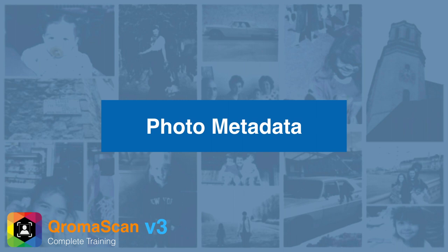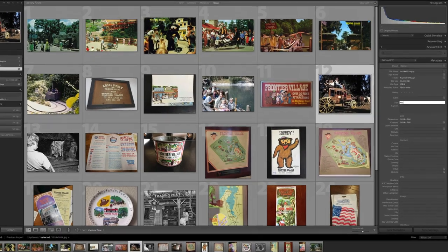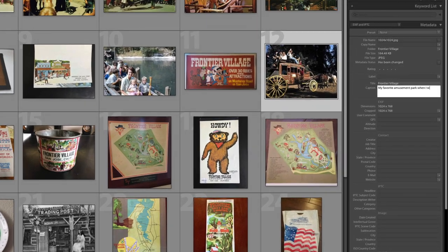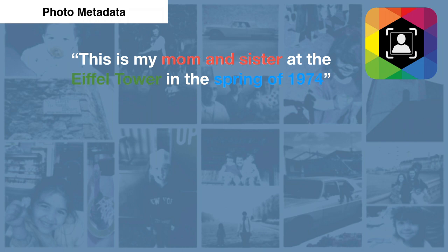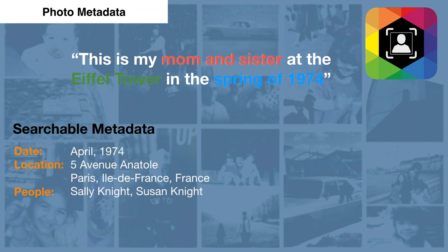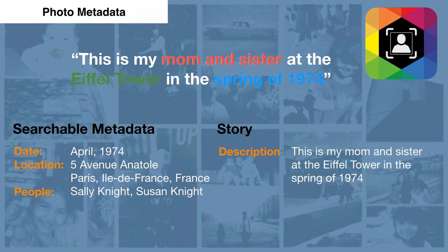Before we get started with ChromaScan, I want to talk a little bit about photo metadata and what it can do for you, and why it's such an important part of the ChromaScan experience. Historically, adding metadata has been like filling out a spreadsheet, where you type information in field after field. ChromaScan uses a new technique called natural language tagging, where you describe your photos normally and our software detects important things like the people, places, and dates. We resolve this information and place the tags in the correct places, so your photos can be searched by date, location, or people. Then we embed your original description into the description tags, so whoever sees it can see the story behind it.